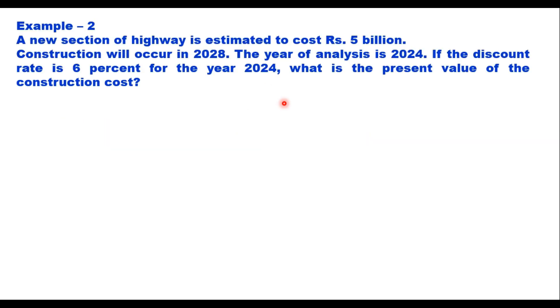Suppose you have a highway section and cost of this new construction is estimated to be Rs 5 billion. Construction will occur in 2028. The year of analysis is 2024. If the discount rate is taken as 6% for the year 2024, what is the present value of the construction cost? That is 5 billion dollars.